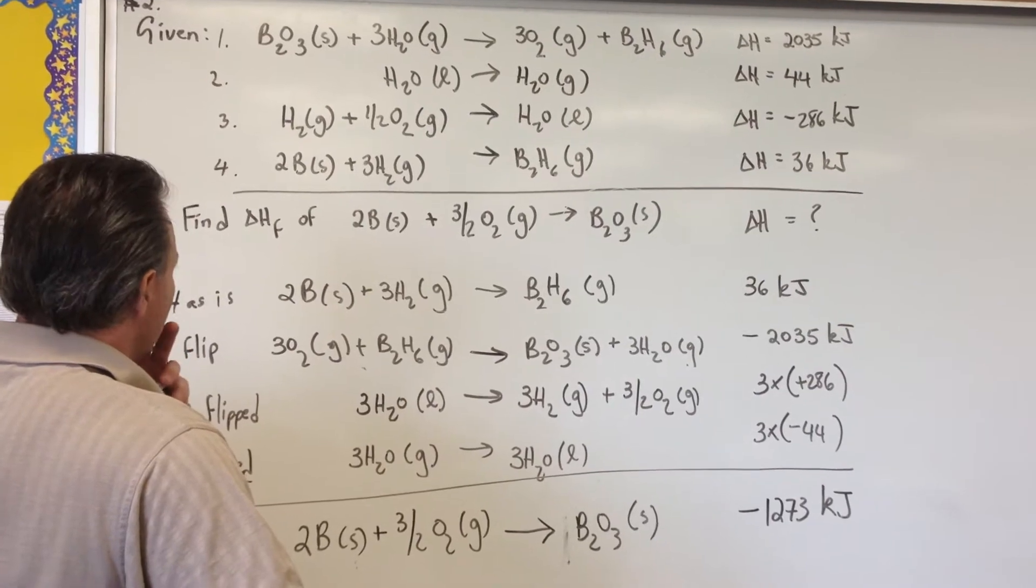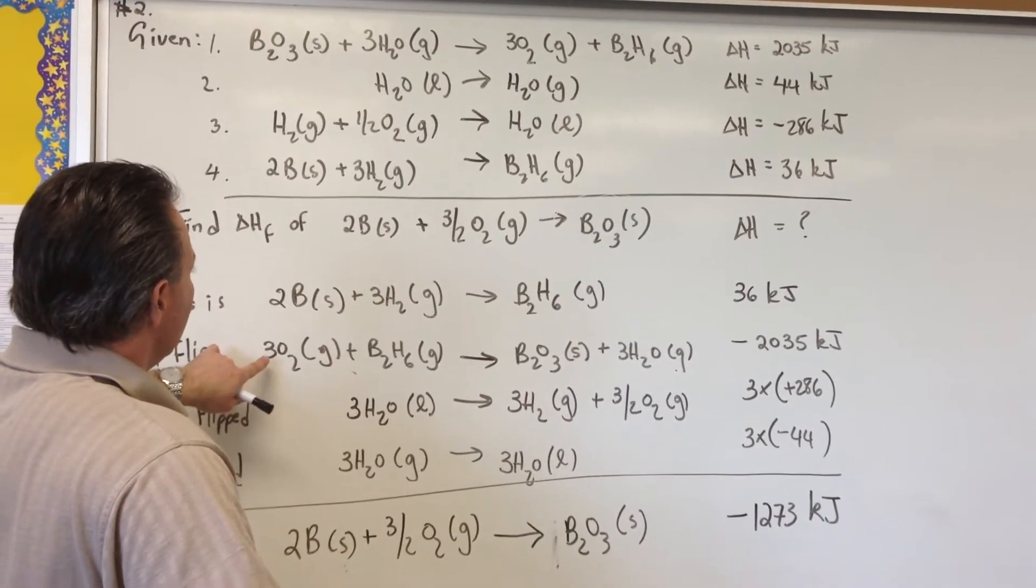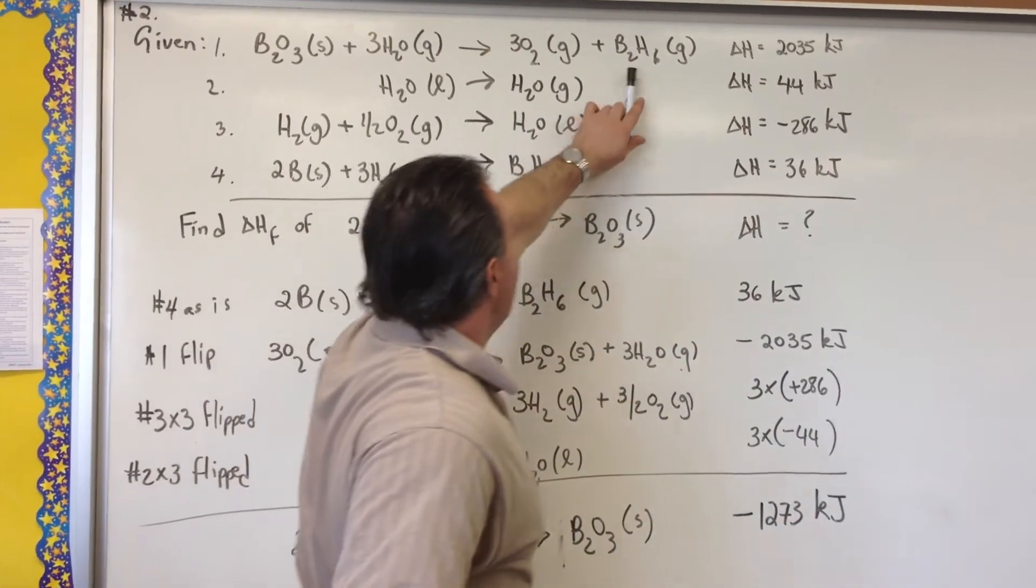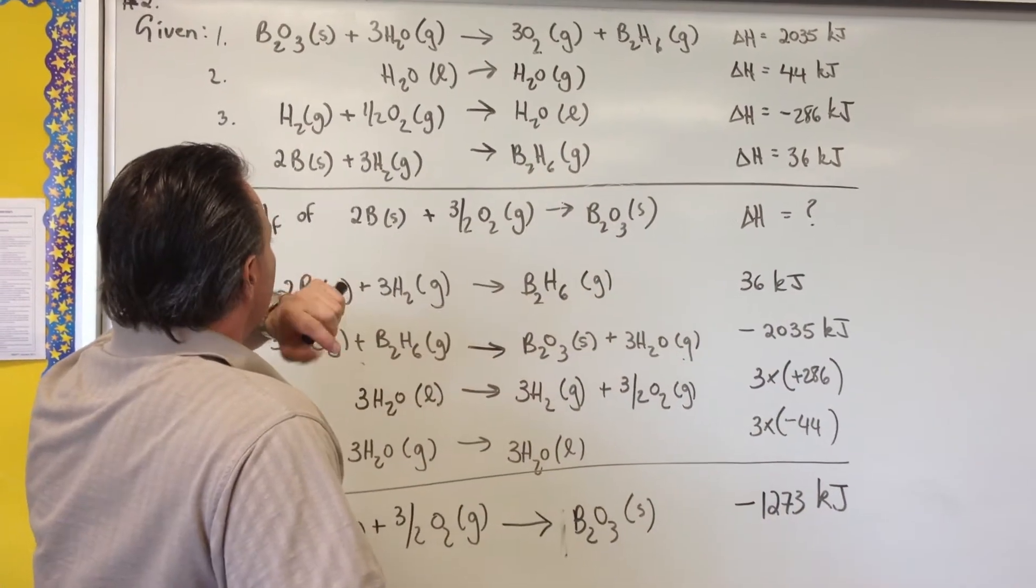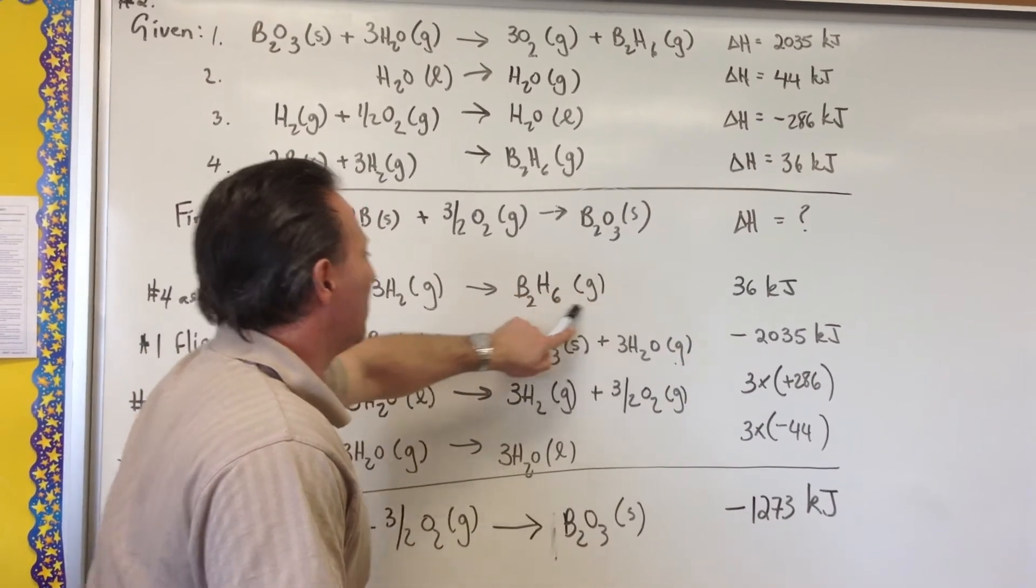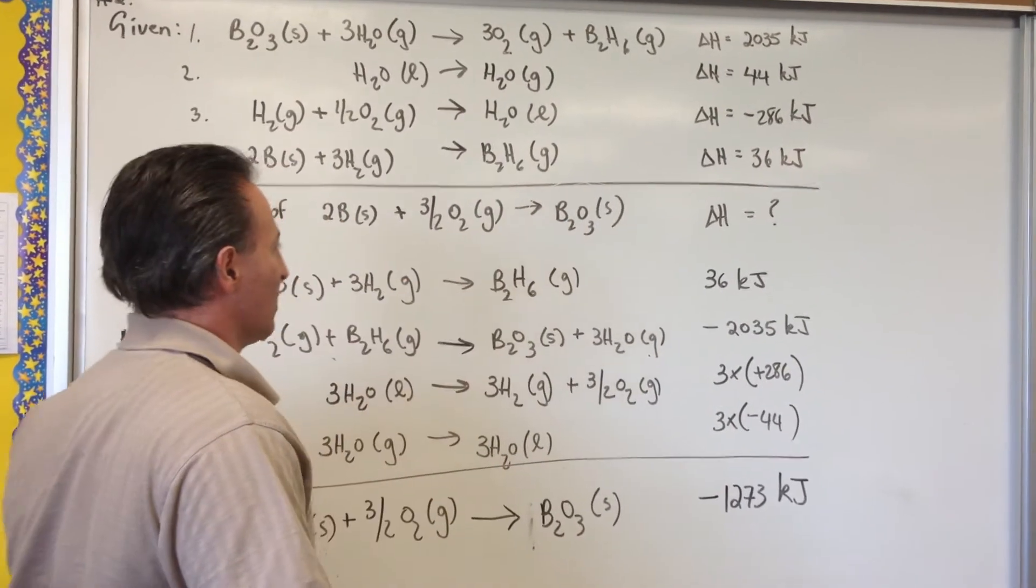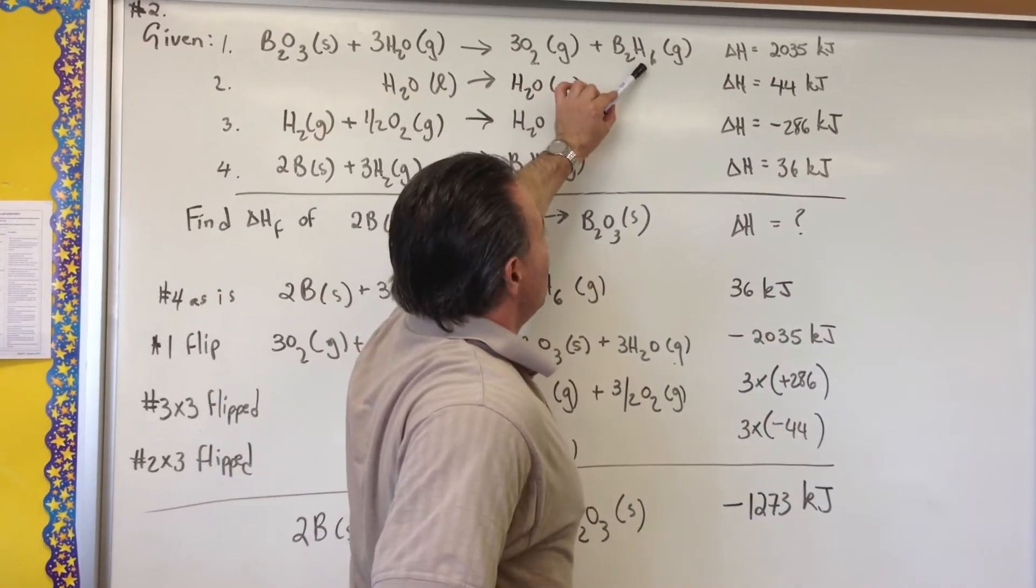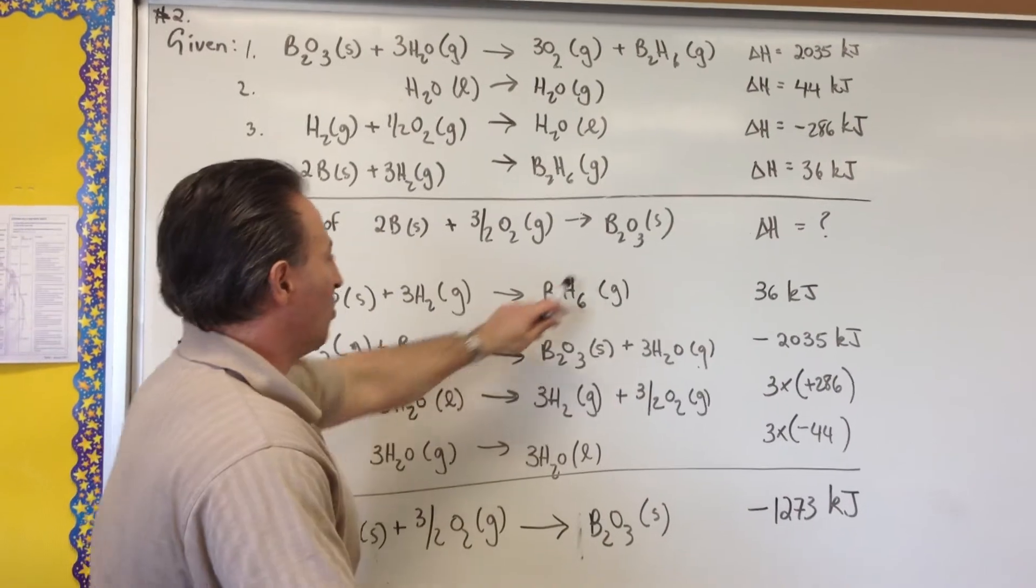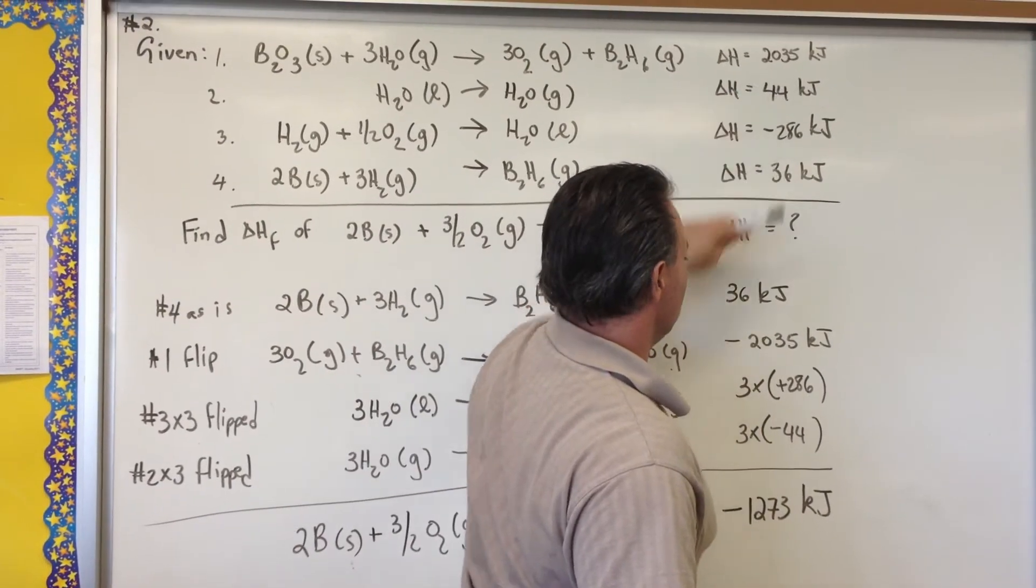The second step, I said flip number one. I said flip number one because I wanted to find something that would eliminate B2H6. The first equation has B2H6 in it, but my target equation has no B2H6. So I took number one and I flipped it because B2H6 appears as a product in number one. I want it to appear as a reactant. So when I flip number one, B2H6 appears on the left, which will allow me to cancel those two in the future. When I flip an equation, I also have to change the sign on its enthalpy, so it's going to become negative 2035.